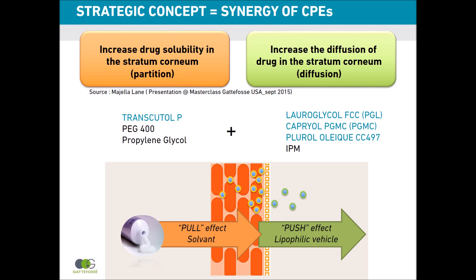These excipients create a pull effect, helping the drug penetrate the skin. On the other hand, to increase the diffusion of the drug through the stratum corneum, you need more lipophilic vehicles such as Chloroglycol FCC, Capryol PGMC, Plurololeic CC-497, or IPM. These excipients interact with intercellular lipids and enhance drug diffusion through the stratum corneum — this is called a push effect using more lipophilic vehicles.